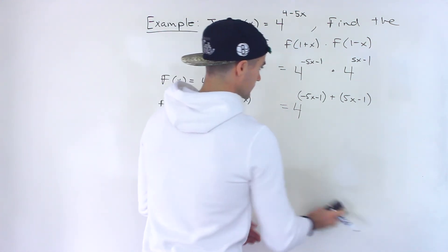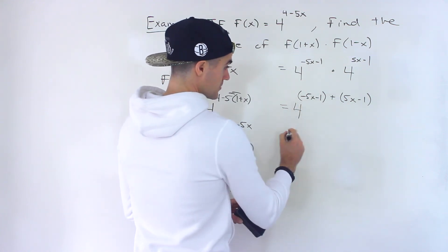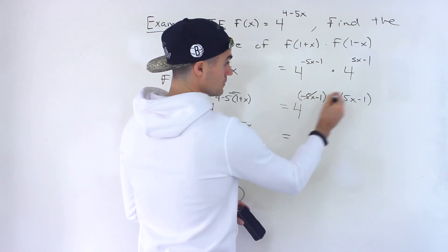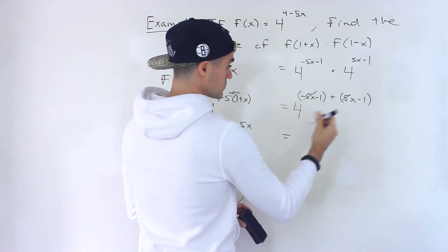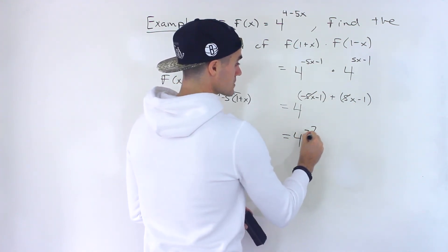And then from here, notice negative 5x plus 5x, that nets out to 0. Then we have negative 1 plus negative 1, which is like negative 1 minus 1, which would be minus 2.